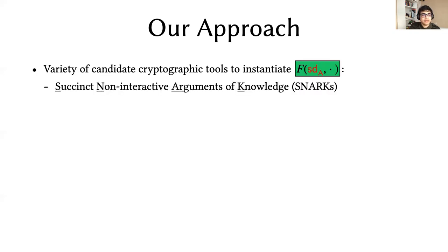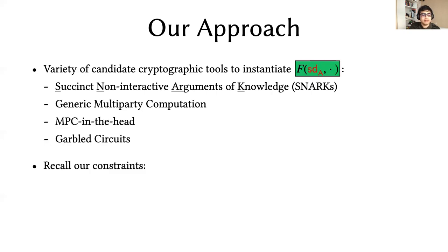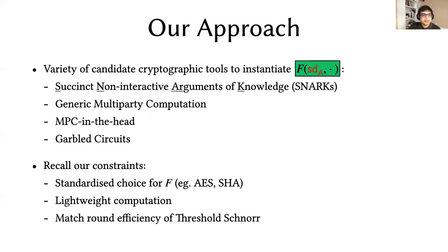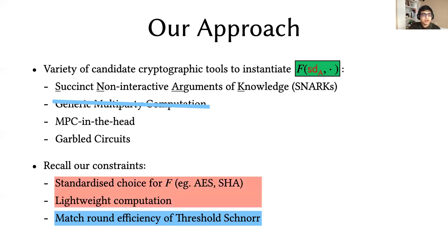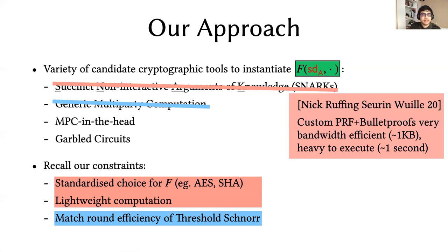There's a variety of candidate cryptographic tools to instantiate such a box. We could use SNARKs, generic MPC, MPC in the head, garbled circuits. But with our constraints in mind, we can start ruling some of these out. Matching round efficiency of threshold Schnorr means that we can't really use generic MPC because MPC protocols that are concretely efficient are also quite interactive and difficult to instantiate statelessly and deterministically. The combination of requirements of low computation and standard PRFs rules out SNARKs, as they tend to be either heavy to compute or require custom arithmetic PRFs for efficiency. Recent work constructed a custom PRF for which bulletproofs are very bandwidth efficient on the order of just a kilobyte, but they tended to be a bit heavier to execute. Their construction results in very compact proofs, but they're a bit slow to generate. This is sort of the opposite end of the spectrum from what we aim to construct.